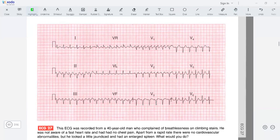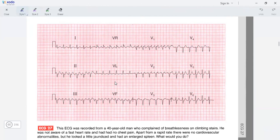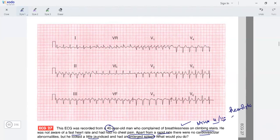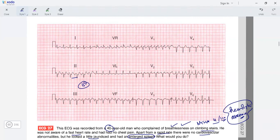This is probably our last case. A 40-year-old man with shortness of breath on climbing stairs, could be NYHA 2 or 3. He was not aware of a fast heart rate and had no chest pain. There were no cardiovascular abnormalities, but he looked a little jaundiced and had an enlarged spleen. Little jaundiced and enlarged spleen - is it a hemolytic anemia? I suspect this could be hemolytic anemia from this history. The rate is fast, around 150. The rhythm is regular, but look at the morphology of the P waves. Doesn't it look like a sawtooth? There are sawtooth-like P waves.